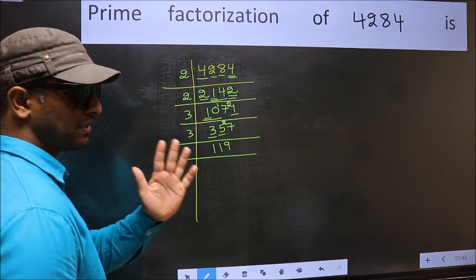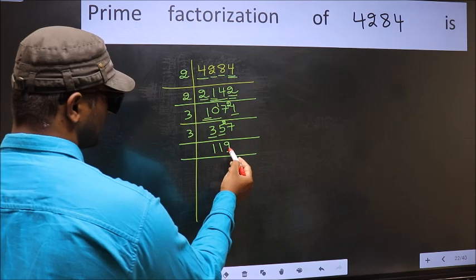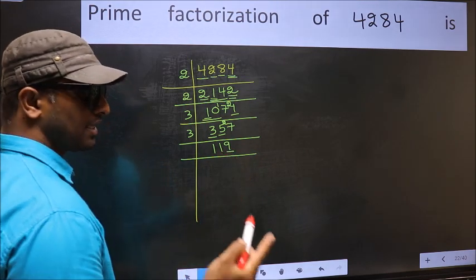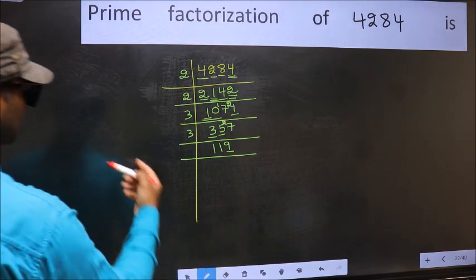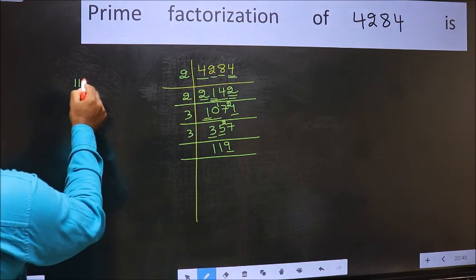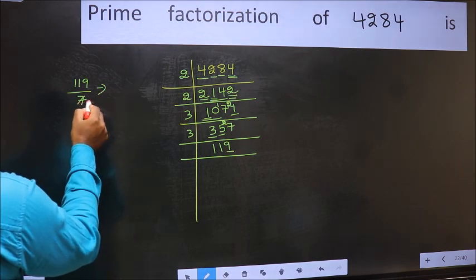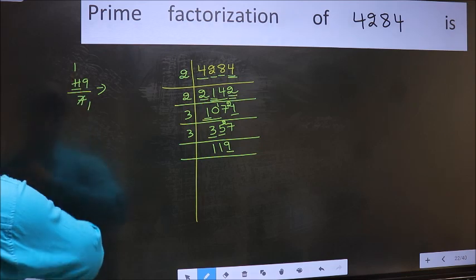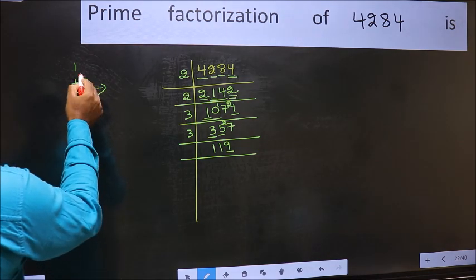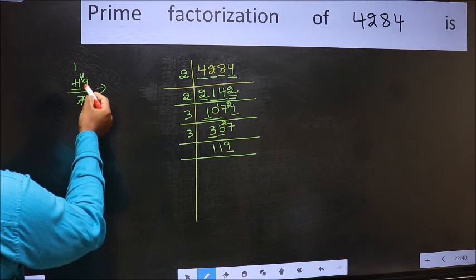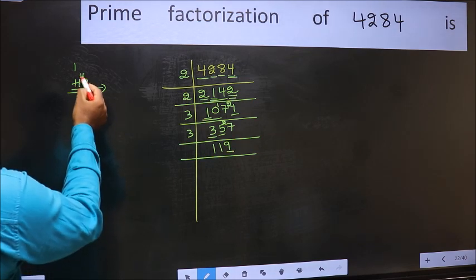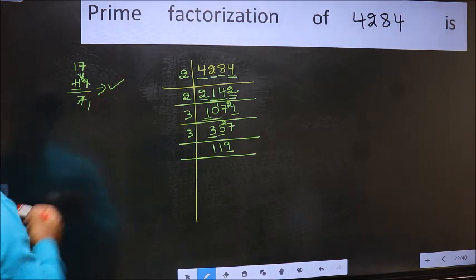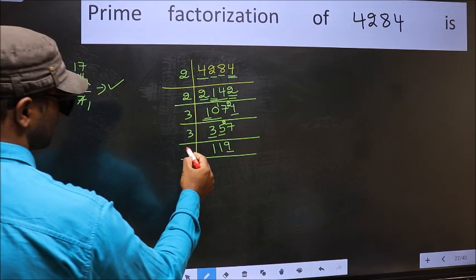Next, prime number 5. The last digit is neither 0 nor 5, so this is not divisible by 5. Next, prime number 7. Let us check divisibility by 7. A number close to 11 in the 7 table is 7 times 1 is 7. 11 minus 7 is 4; 4 carried forward gives 49. When do we get 49 in the 7 table? 7 times 7 is 49. No number has been left out, so this is divisible by 7. So, 7 here.